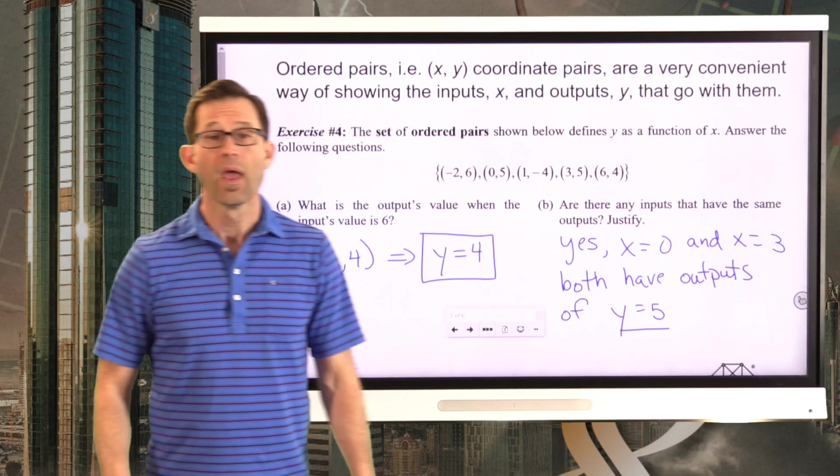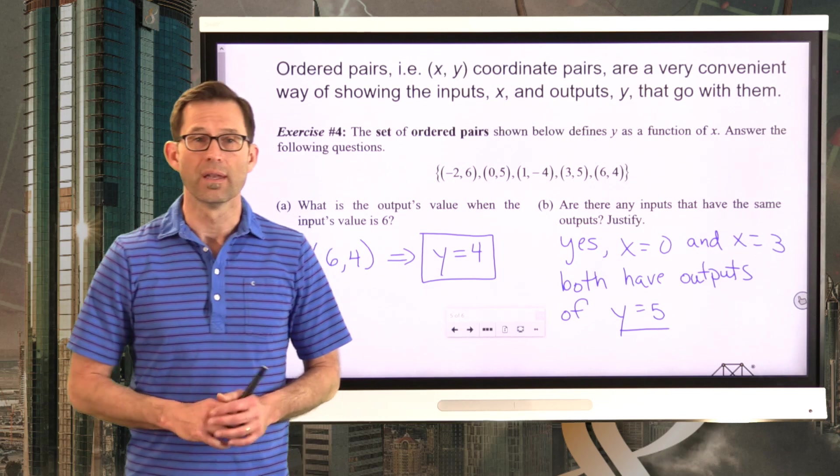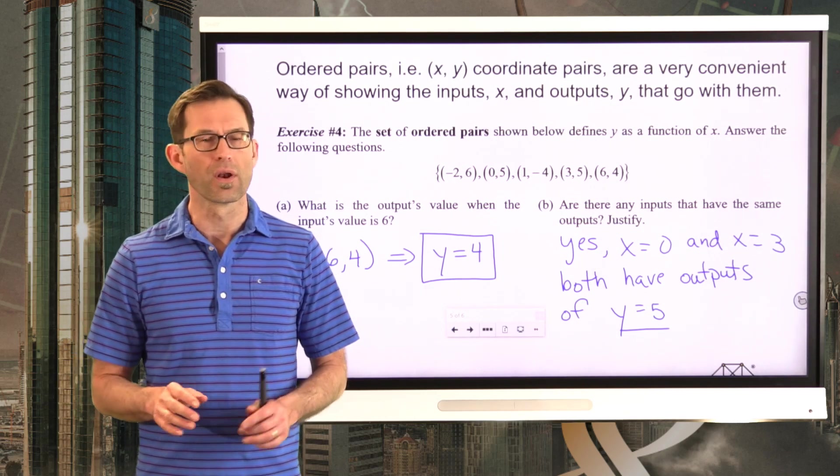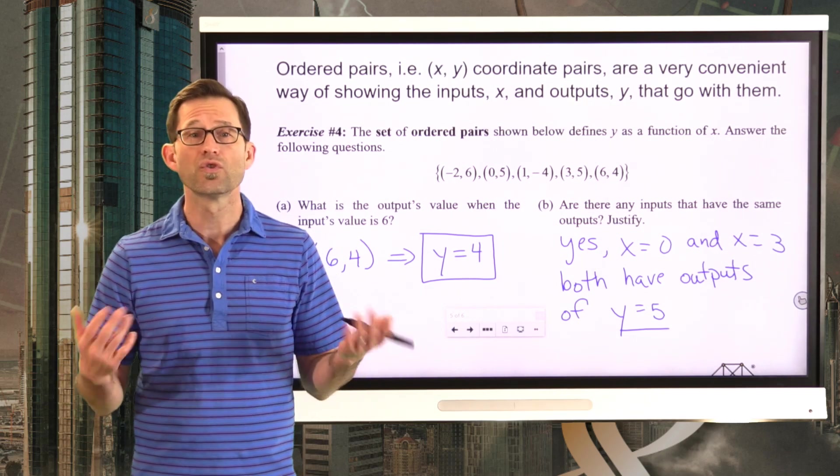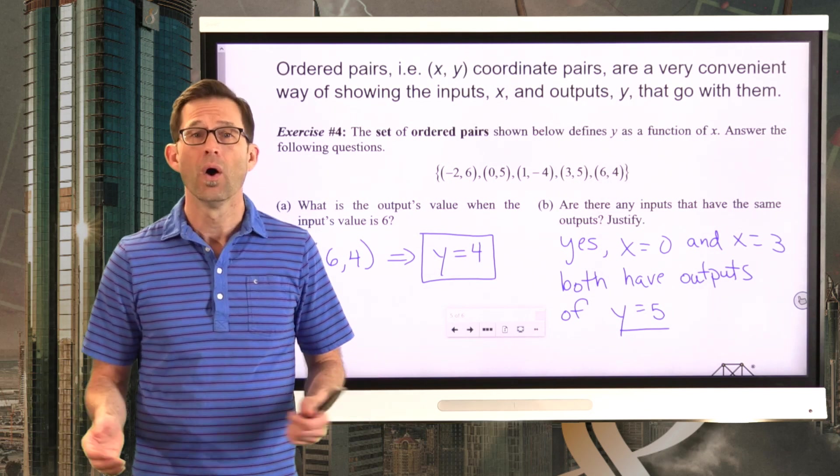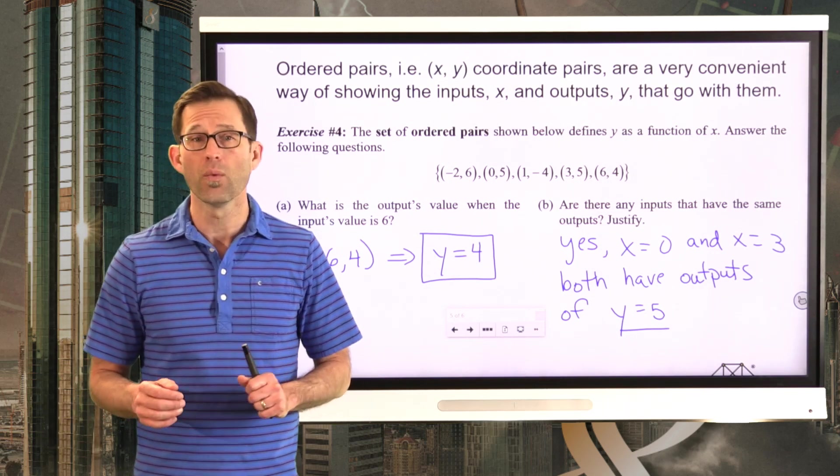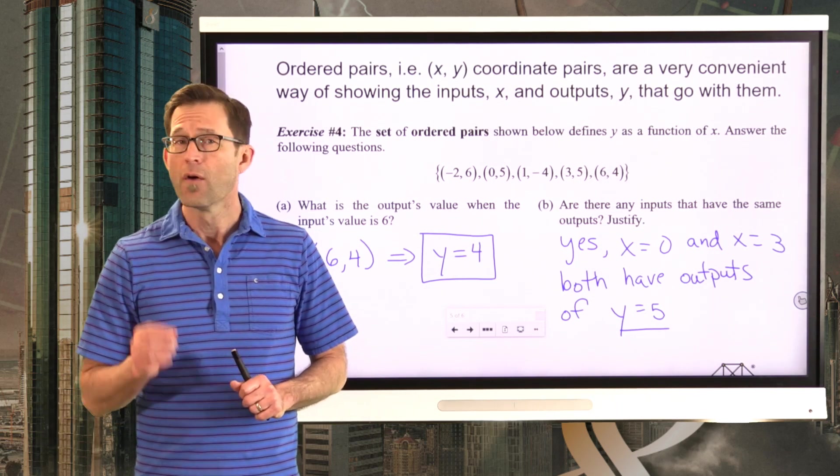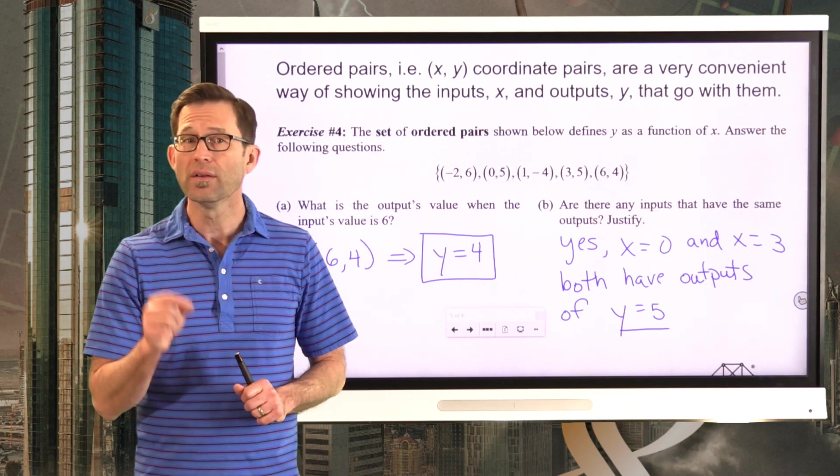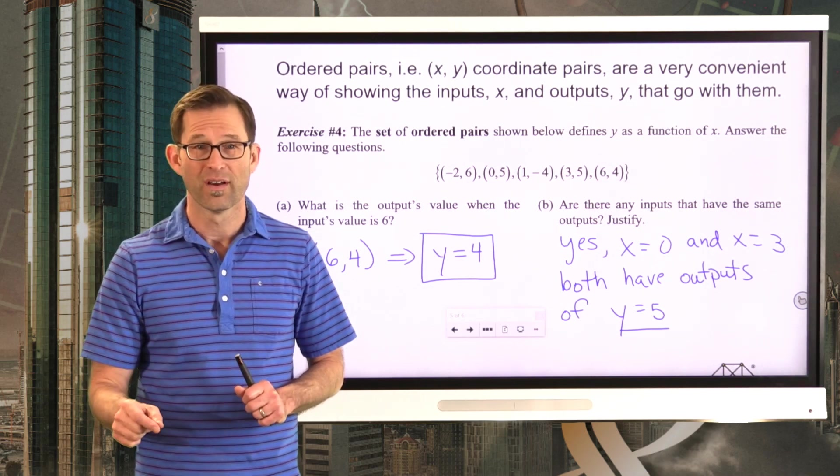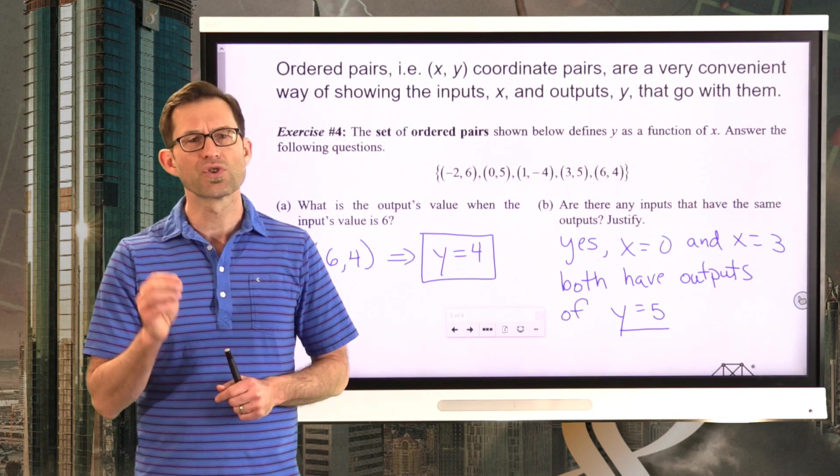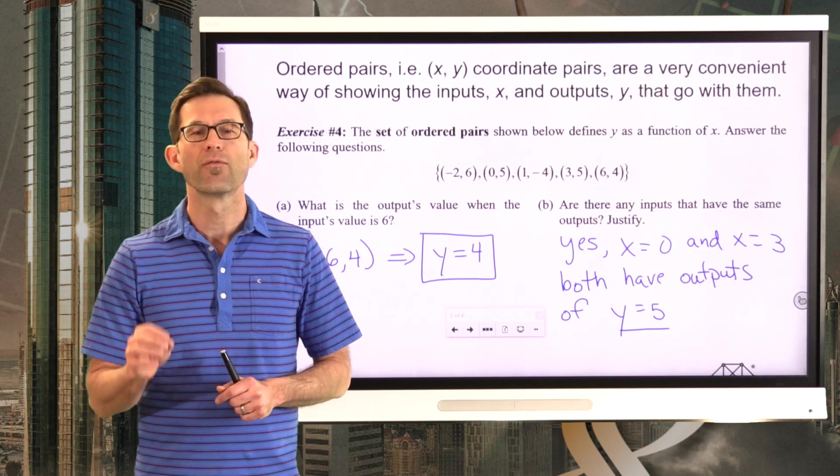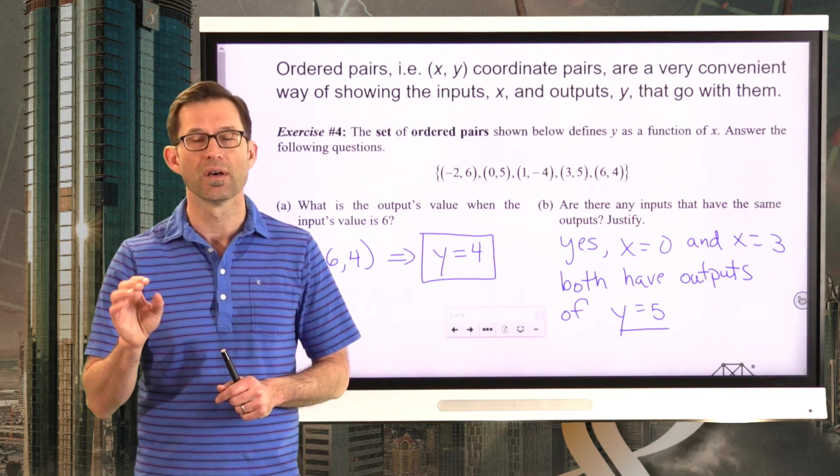And again, we really want to harp on this idea because a function's a little bit weird. It always has two variables involved, two quantities involved. One of them being the input quantity, one of them being the output quantity. For any given input, there is only one output, okay? But you could certainly have the same output for multiple values of the input.